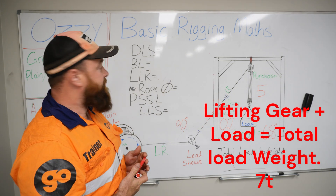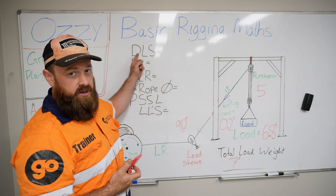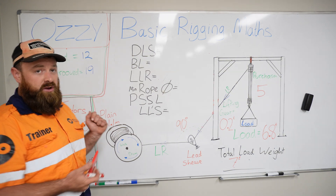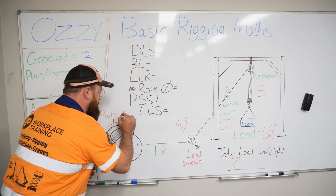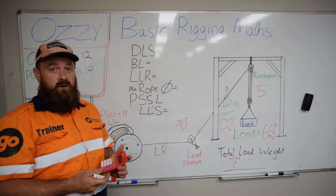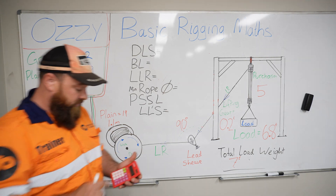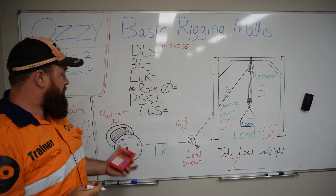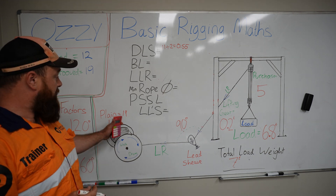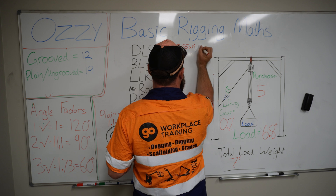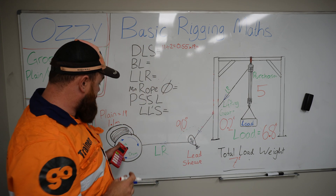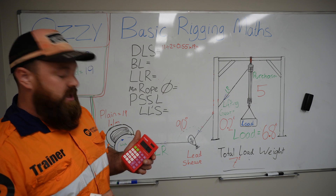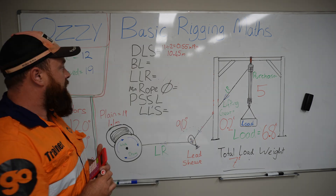Next we want to find out the distance to the lead sheave (DLS) from the winch to our lead sheave. We need to find out what kind of winch drum we have — we have a plain winch drum. The magic number for a plain winch drum is 19. The winch drum is 1.1 metres wide. We divide that by 2 to get 0.55, then multiply by 19. So 0.55 times 19 equals 10.45 metres — that is the minimum distance required from our winch drum to our lead sheave.